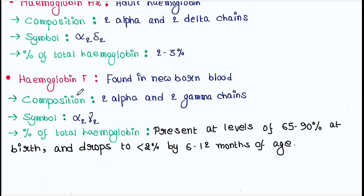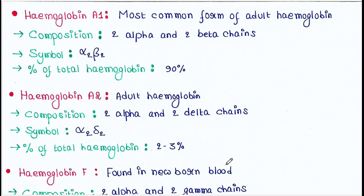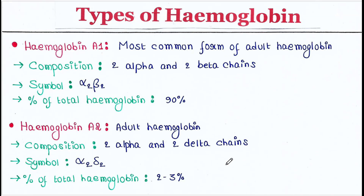Hemoglobin F has two alpha and two gamma chains, with the symbol alpha-2 gamma-2. It is present at levels of 65 to 90 percent at birth and drops to less than 2 percent by 6 to 12 months of age. That is all for today's lecture. I hope you liked it — thank you for watching.